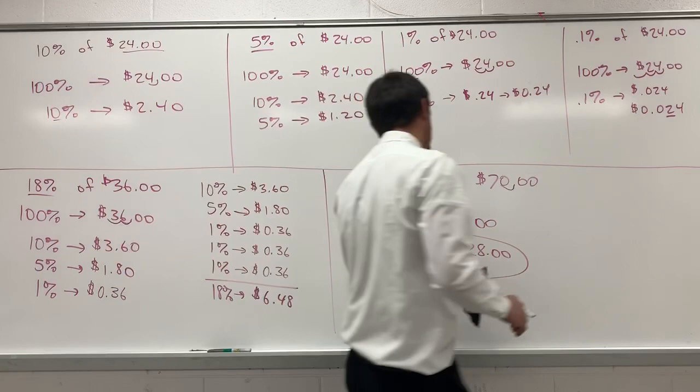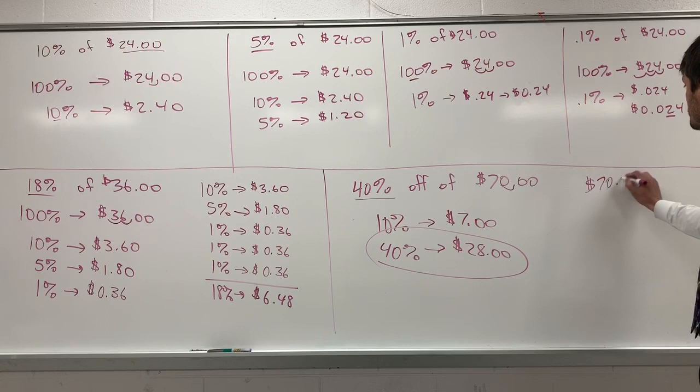So, you take $28 off of the $70. And $70 minus $28 gives you a final cost of $42.